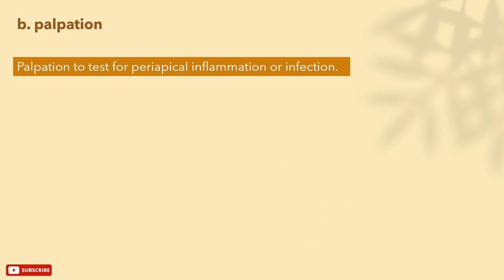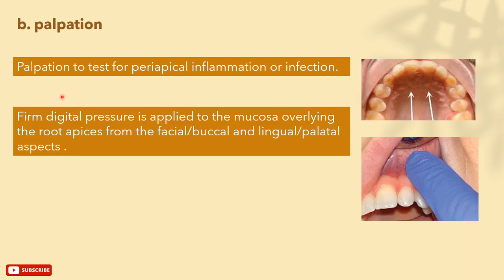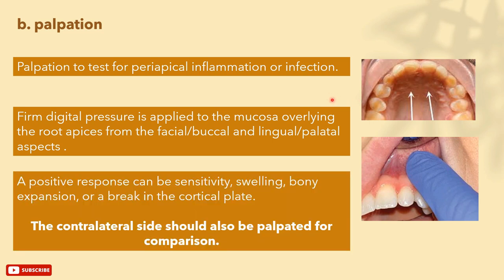Palpation tests periapical inflammation or infection. Apply firm pressure with your finger to the mucosa overlying the root apex of the tooth, both on the facial or buccal surface and the lingual or palatal surface. A positive response can include sensitivity, swelling over the area, bony expansion due to infection, or a break in the cortical plate of bone. Always test the contralateral site for comparison.